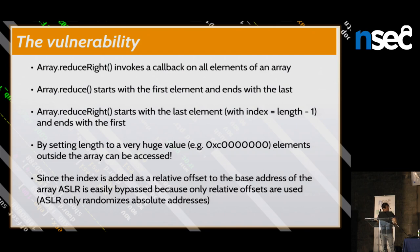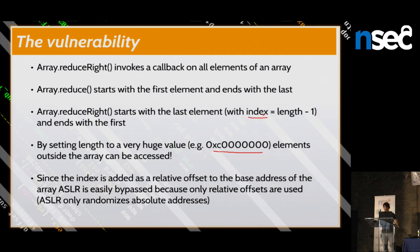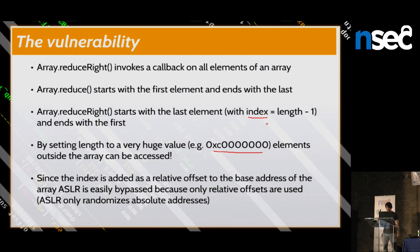The problem is that in JavaScript you can set the length field to any value you like — for example, a very large value like 0xC0000000. The index is declared as a signed integer, which means it can wrap around to a negative number. This is exactly what happens. I can set index to a negative number, and this allows me to bypass the bounds check on the array.